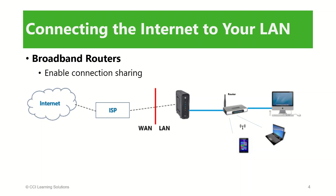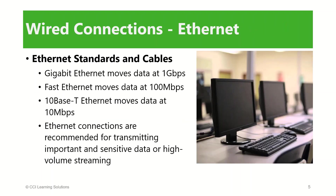A wired connection to a LAN is called an Ethernet connection because it uses a networking cable called an Ethernet cable. Using a wired connection provides the fastest and most secure connection possible within the LAN. An Ethernet connection can transmit data at one of three standard speeds: Gigabit Ethernet moves data at 1 Gbps, Fast Ethernet moves data at 100 Mbps, and 10BASE-T Ethernet moves data at 10 Mbps.